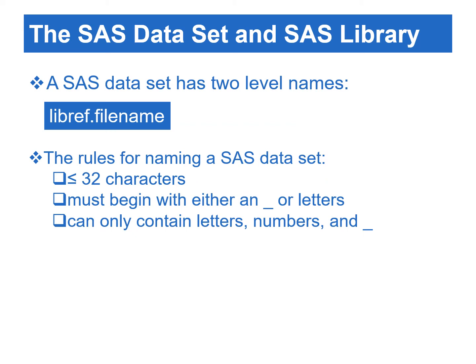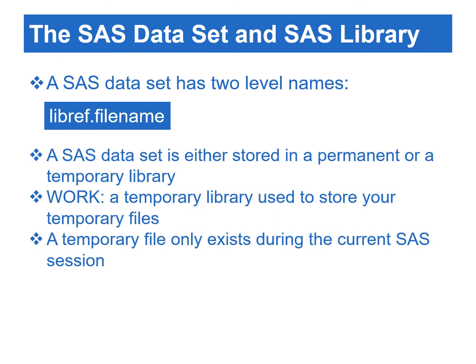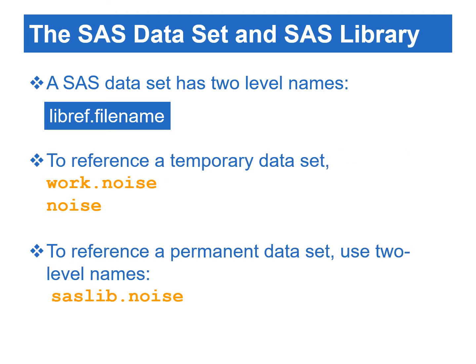To access the data set in a permanent library, we need to use a two-level name. The first component of the two-level name is the library name, and the second component is the name of the SAS data set. The two names are separated by a period. The rules for naming a file name are like the rules for naming the libref, except that the number of characters in the name cannot be more than 32. A SAS data set can be stored in either a permanent or a temporary library. The work library is a temporary library for storing temporary SAS files. It is automatically created when you start your SAS session. All files stored in the work library are deleted when the current session terminates. To refer to a data set stored in the work library, you can use either a single-level name or a two-level name. However, to refer to a data set stored in the permanent library, you must always use a two-level name.